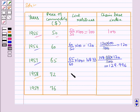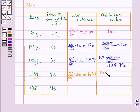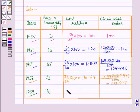For 1958, the link relative equals 72 over 65 into 100, which equals 110.77, and the chain-based index equals 110.77 × 129.996 / 100, which equals 143.997. For 1959, the link relative equals 76 over 72 into 100, which equals 105.56.